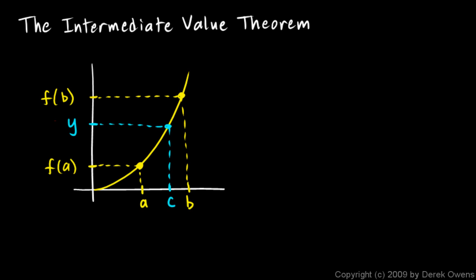Another comment: the intermediate value theorem depends on the completeness of the real numbers. One of the things we say about the real number line is that it is complete — there are no holes and no gaps.